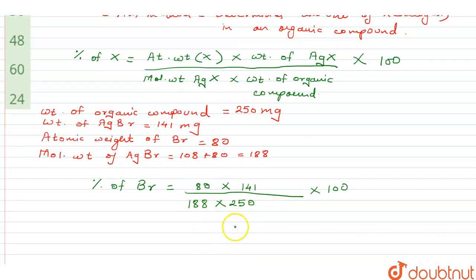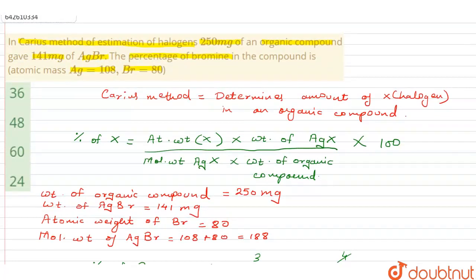Proceeding towards the calculations, let us cancel this off. This goes by 4, this goes by 4, and over here we have 47, and 47 times 3 is 141, and that gives me 24 percent. So 24 percent of bromine is the percentage of bromine in the compound, and that matches with our option number 4. I hope you understood the explanation, thank you.